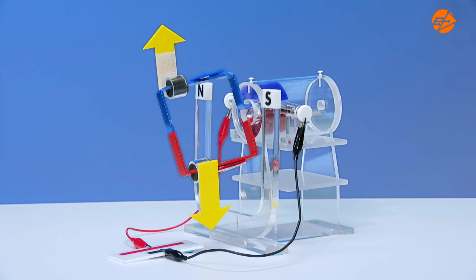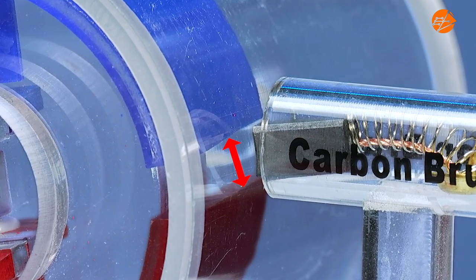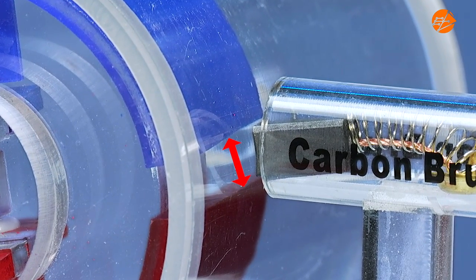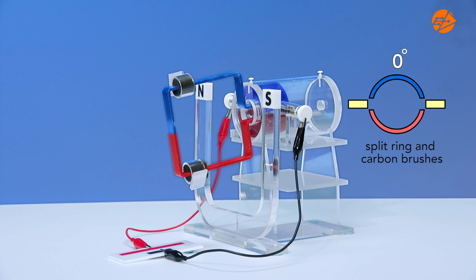When the coil reaches its vertical position, the gap between the split rings prevents electrical contact with the carbon brushes. As a result, no current passes through the split ring. There is no magnetic force and therefore no turning effect.